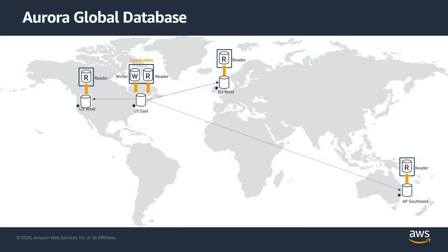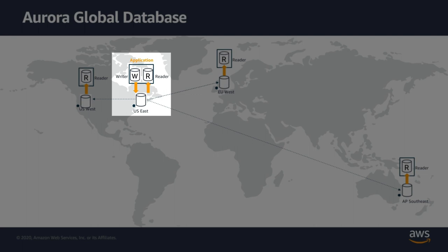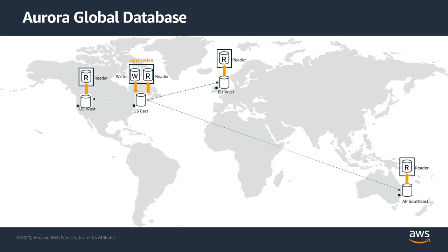Here is a visual representation of how a global database topology works. We have a global database cluster where the primary cluster is US East, with a reader and a writer node. Keep in mind that only your primary cluster lets you have a writer node. All other secondary clusters can only have a reader node. In this topology, US West, Europe West, and Asia Pacific Southeast are all secondary clusters and they're all read-only.